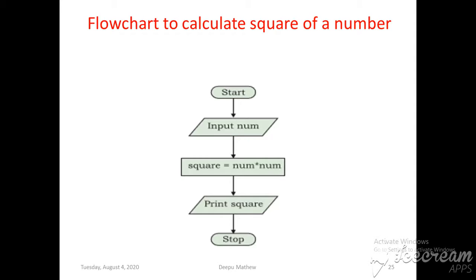To summarize: first start using the oval symbol, then input the number using the parallelogram. For the operation, since the problem is to find the square, we use 'square = num × num' inside the rectangle box. After the process, print the output 'square' using the parallelogram, then stop the flowchart using the oval symbol.